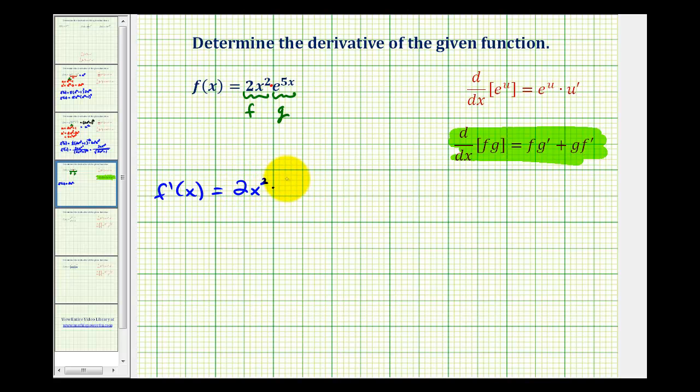times the derivative of e to the power of 5x, plus the second function, e to the 5x, times the derivative of the first function, 2x squared.